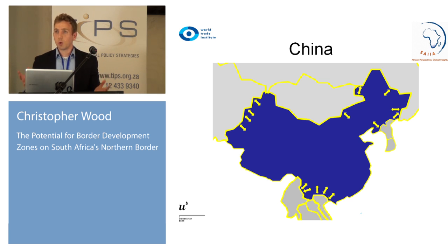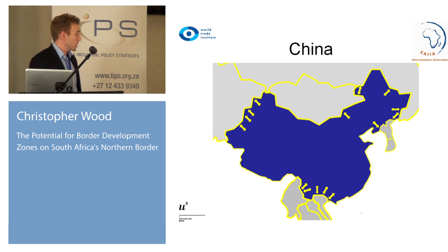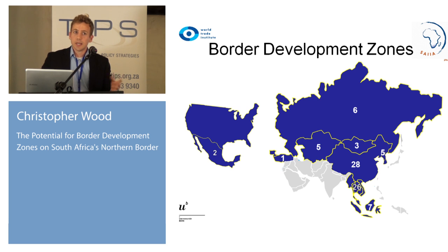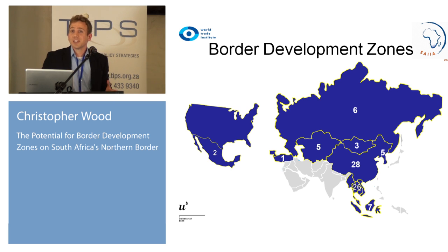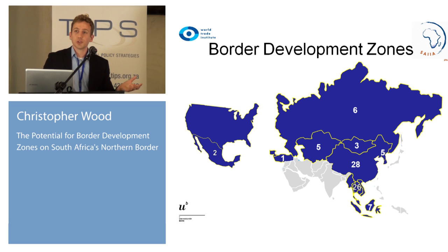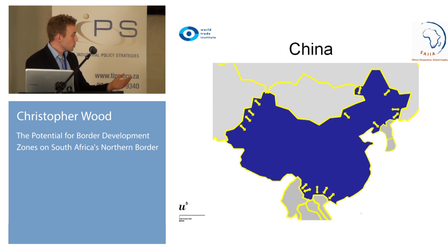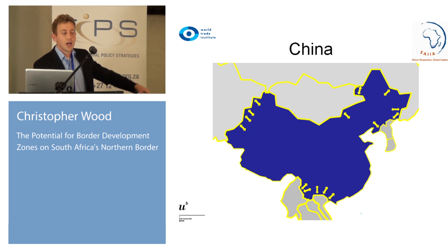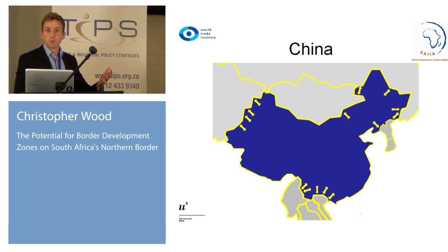China has a huge land border covering many countries, and every arrow on the map represents one of their border economic cooperation zones. The US and Turkey base their border strategies on more general things like trade — special customs exemptions and export strategies. The rest are really focused on special economic zones at the border, specifically crafted to the border environment and targeting cooperation with the country across the border. China's SEZ history was a key part of its opening up, mostly along the coast around Shanghai and Guangdong. These border zones were an attempt to spread that development to border areas.